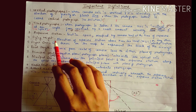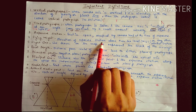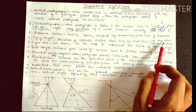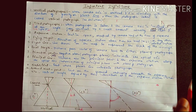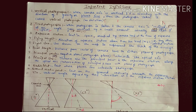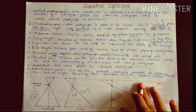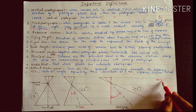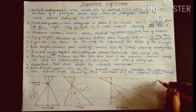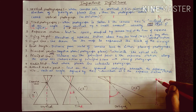Flying height is the elevation of the exposure station above mean sea level or any other selected datum. The vertical distance from the exposure station down to MSL is called flying height.